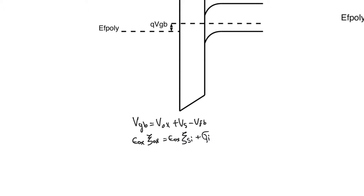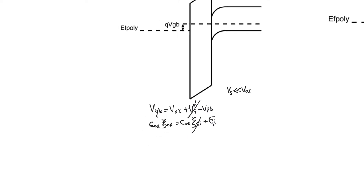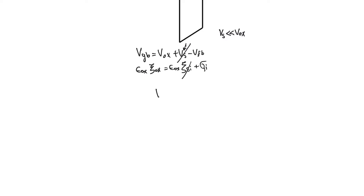In depletion mode, the surface potential is still pretty small — much smaller than the oxide potential — so we can ignore the silicon voltage and the silicon field in relation to the oxide field. This gives us two useful simplified equations: Vgb equals V_oxide minus V_flatband, and epsilon_oxide times the electric field in the oxide equals the accumulated charge in silicon.